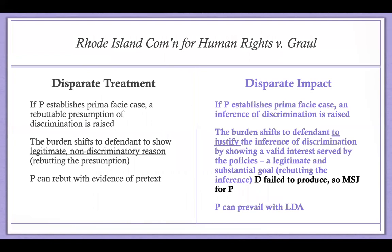Comparing the two approaches: in disparate treatment, once a prima facie case is established, a rebuttable presumption of discrimination arises, shifting the burden to defendant to show a legitimate non-discriminatory reason, and the plaintiff may rebut with evidence of pretext. In disparate impact, establishing the prima facie case raises an inference of discrimination, shifting the burden to defendant to justify the policy as serving a valid and substantial interest — and in Grawl the defendant failed to produce such justification.